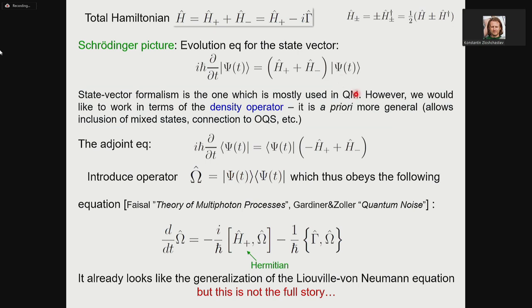On the left part you have a clearly Hermitian operator; on the right part you have a non-Hermitian operator. Therefore, you have to be a little bit more smart. Instead of dealing with Schrödinger equations, you have to switch to the density operator. This allows inclusion of mixed states, better connection to open quantum systems, etc. To do that, you formulate the adjoint equation, introduce the operator which is a product, then multiply and add these two equations together. You arrive at this equation for operator omega and then generalize this omega to any arbitrary density operator. What we have: the standard von Neumann commutator term where H_+ is the Hermitian part of your Hamiltonian.